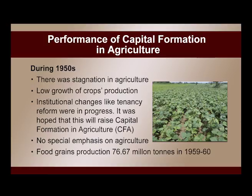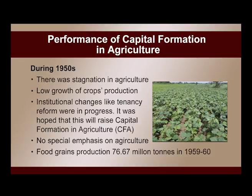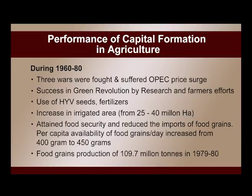The performance of capital formation in agriculture largely depends on the emphasis given to agriculture in each decade. During the 1950s, there was stagnation in agriculture with low growth of capital and production. Institutional changes like tenancy reforms were hoped to raise capital formation. No special emphasis was given to food production; food production in 1959-60 stood at 77 million hectares. From 1960 to 1980, India fought three wars and suffered the OPEC surge, but there was success in the Green Revolution.